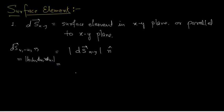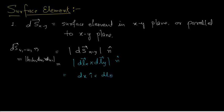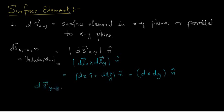This will be the modulus of DS vector XY, with the surface perpendicular to N cap. You can write it as DLX vector cross DLY vector, because H1 and H2 are 1. So DLX is DX i-cap and DLY is DY j-cap, giving DS vector XY as DX DY N-cap. Similarly, DS vector of YZ will be DY DZ N-cap, and DS vector of ZX will be DX DZ N-cap.